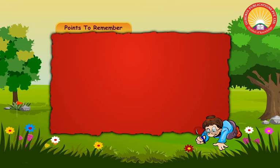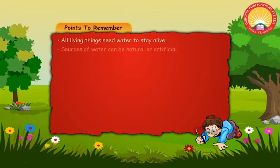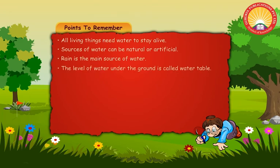Points to remember: All living things need water to stay alive. Sources of water can be natural or artificial. Rain is the main source of water.